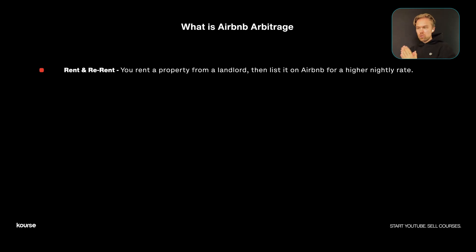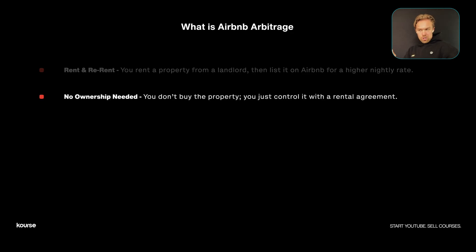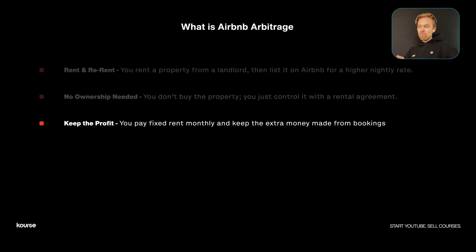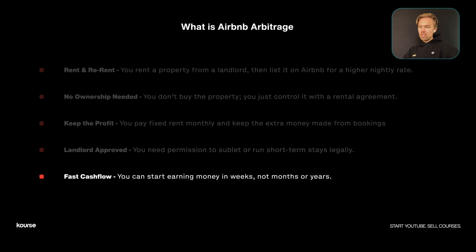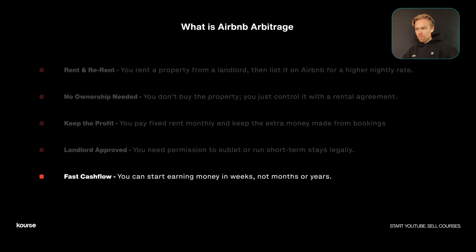First — what is Airbnb arbitrage? Rent and re-rent: you rent a property from a landlord, then list it on Airbnb at a higher nightly rate. No ownership needed — you control it with a rental contract. You keep the profit: pay fixed monthly rent and keep the extra money from bookings. You need landlord approval to sublet legally. And a great benefit is fast cash flow — you can start earning in weeks, not months or years.